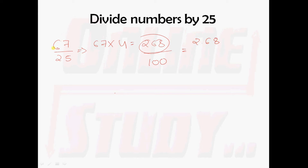What we have done here: we are dividing 67 by 25. In this case, just multiply 67 with 4 to get 268, and this 268 should be divided by 100, giving you 2.68.